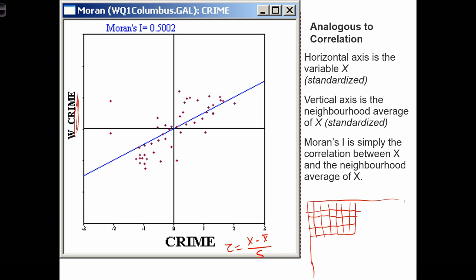And say we have a crime statistic for each of these locations. So we could plot this x-axis, the horizontal axis, is just composed of the values of crime in these different locations.